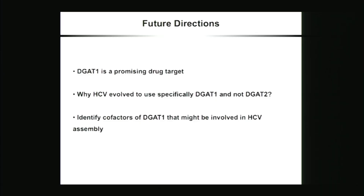We think DGAT1 is a promising drug target because it is really at the crossroads of the function of two important viral proteins. There are potent DGAT1 inhibitors that have been characterized, and some of them have even been in clinical trials. What's really interesting is that when you inhibit DGAT1 in cells, you still have the other enzyme DGAT2 that can synthesize triglycerides to accomplish basic metabolism.